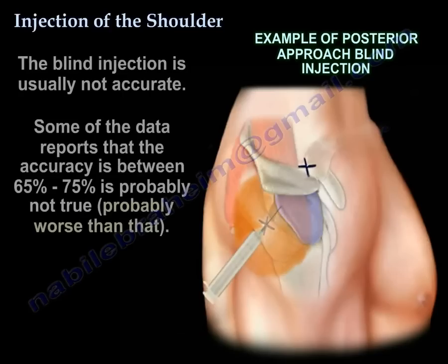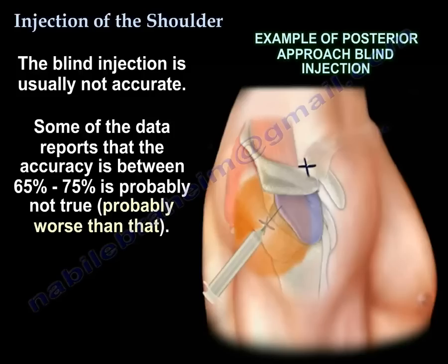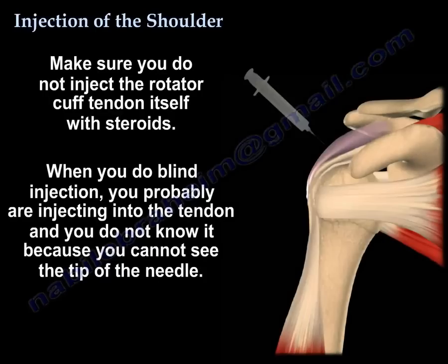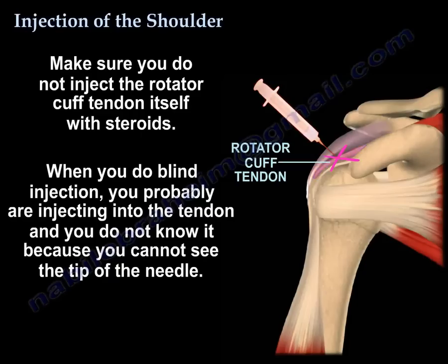The blind injection is usually not accurate. Some data report that the accuracy is between 65 to 75 percent, which is probably not true. Make sure you don't inject the rotator cuff tendon itself with steroids. When you do a blind injection, you're probably injecting the tendon and you don't know it because you don't see the tip of the needle.